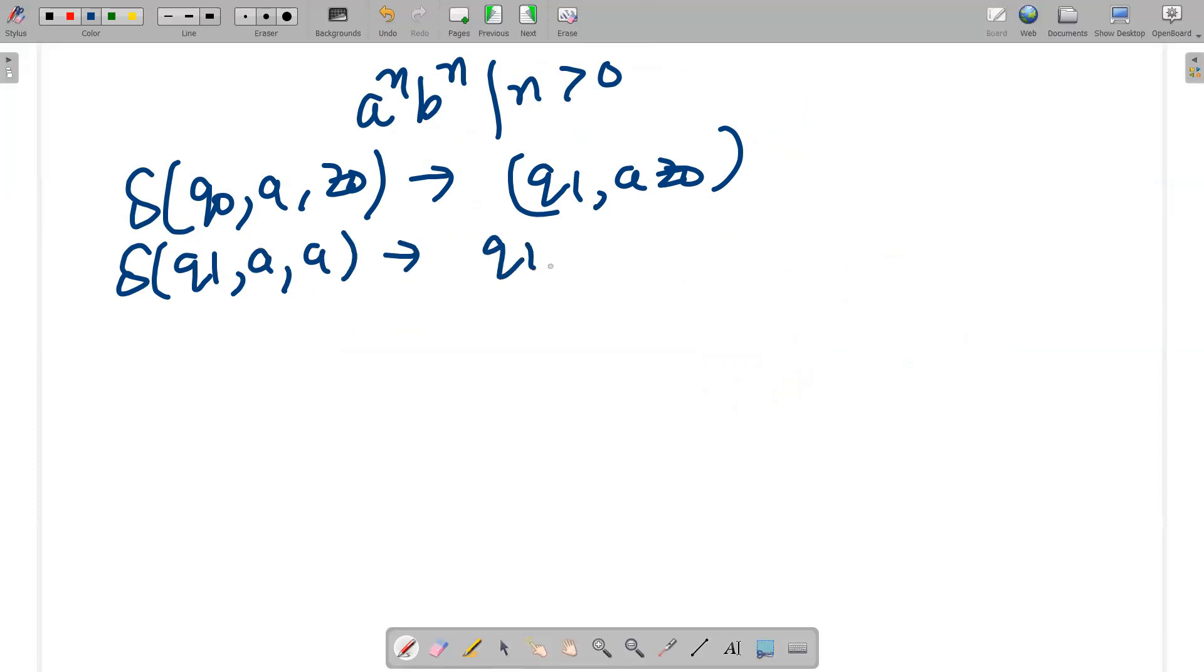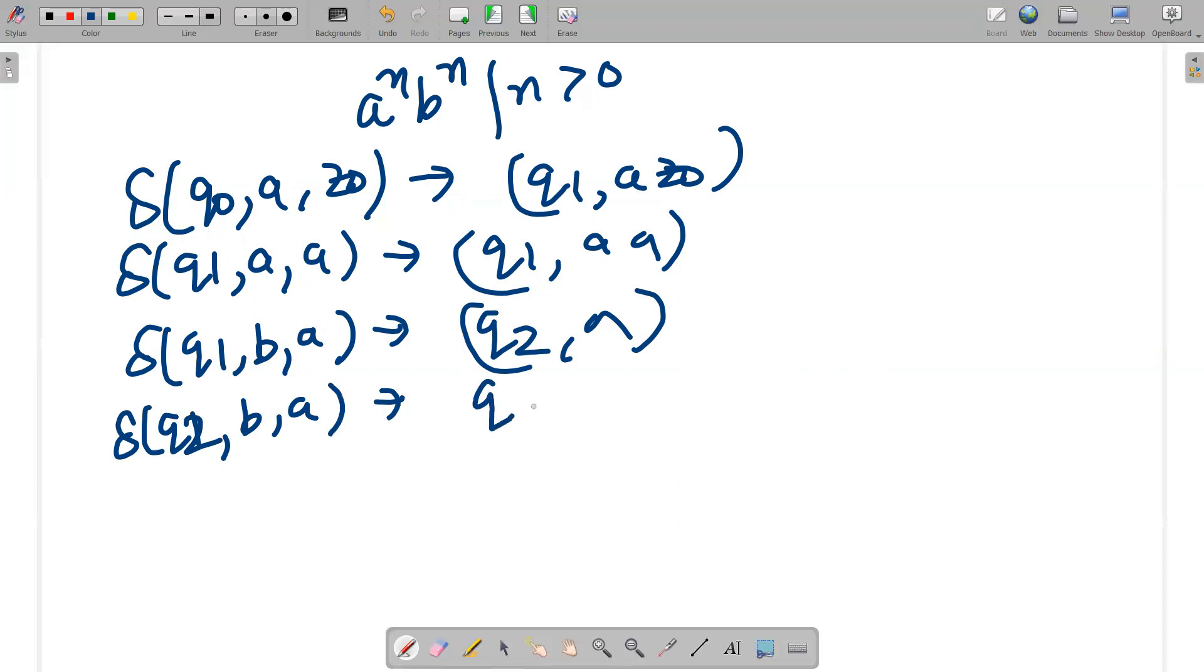Let's say q1, b, a, I'm going to q2, I'm putting null. q2, b, a, I'm putting q2, null. And last state I'm writing q2, null, z0, I'm writing q3, null, q3, z0.